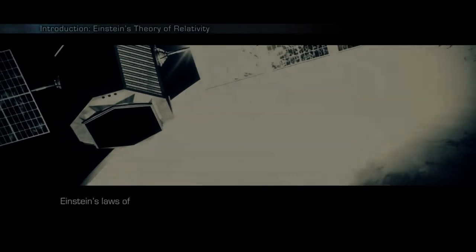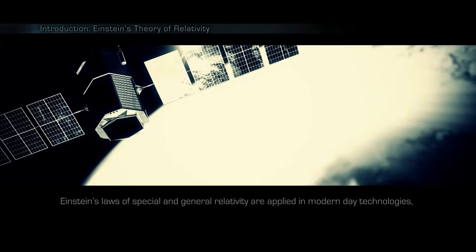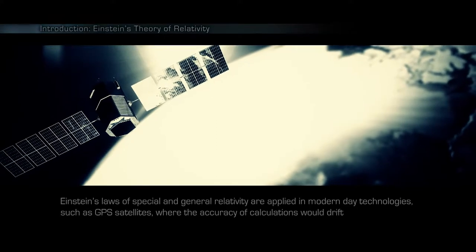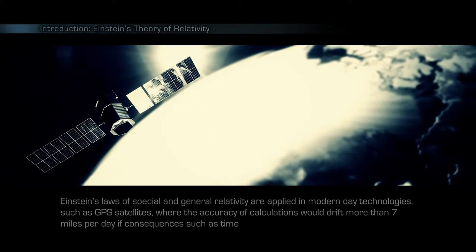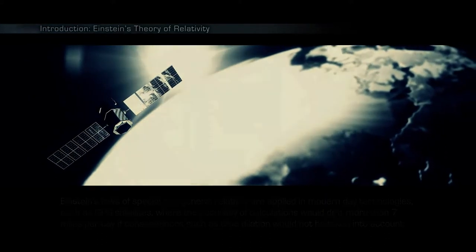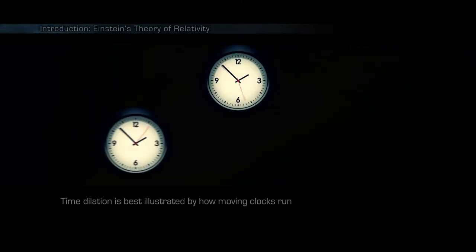Einstein's laws of special and general relativity are applied in modern-day technologies, such as GPS satellites, where the accuracy of calculations would drift more than 7 miles a day if consequences such as time dilation would not be taken into account. Time dilation is best illustrated by how moving clocks run slower.